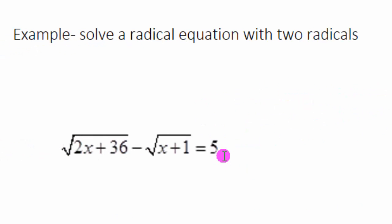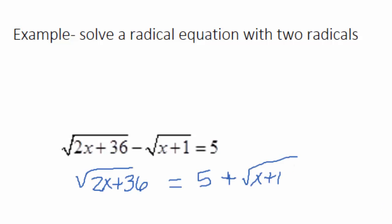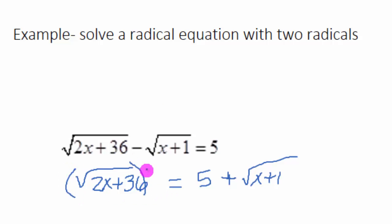So here's the equation. We're going to isolate one radical on each side of the equation. So we're going to add this square root of x plus 1 over to this side of the equation. We've added this over to this side, and now we're going to square both sides.